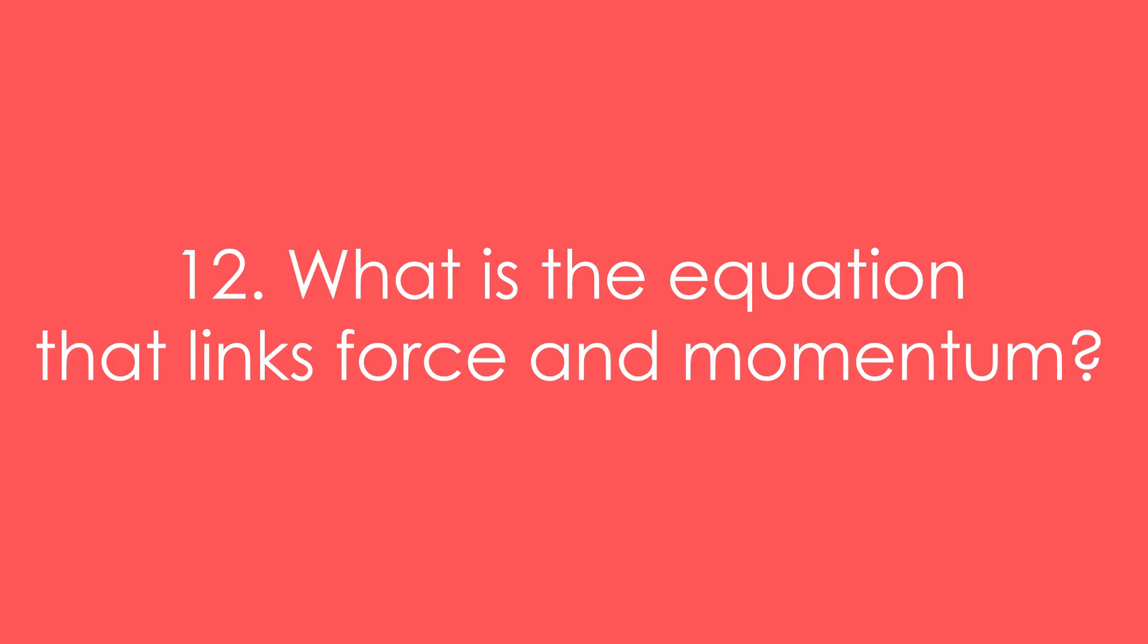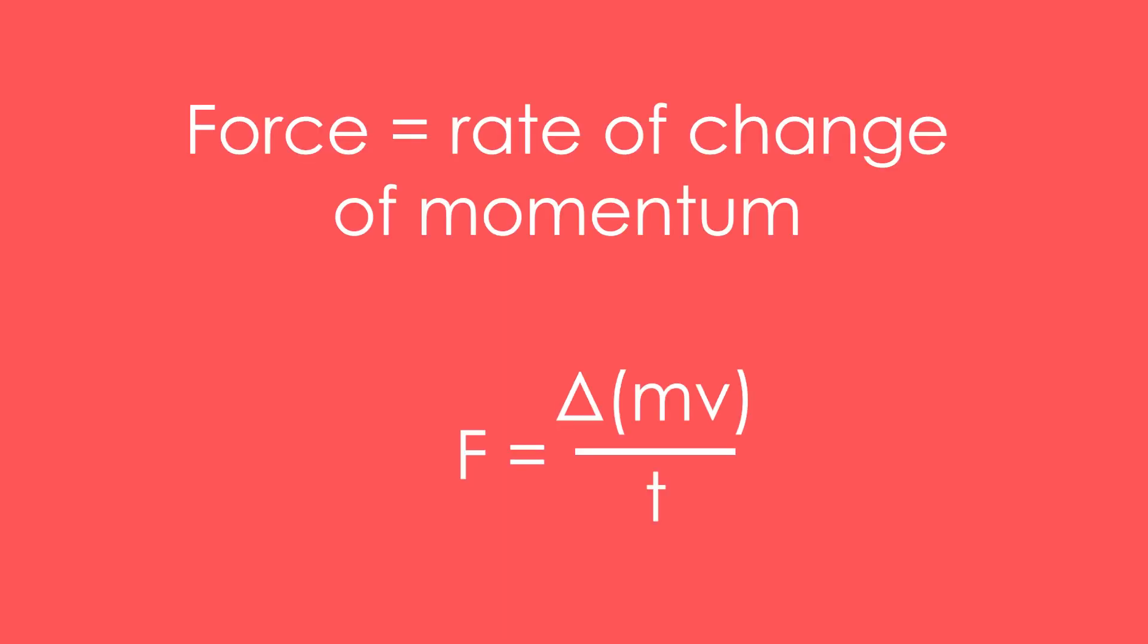12. What is the equation that links force and momentum? Force is equal to rate of change of momentum. F is equal to delta, that's change, of MV divided by T. And that's why crumple zones are so good. They increase the time of a collision, therefore reducing the force on the passengers.